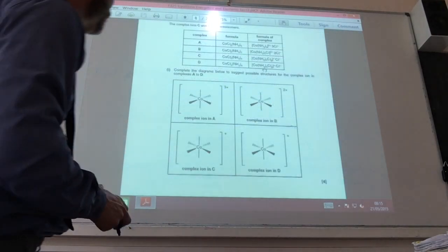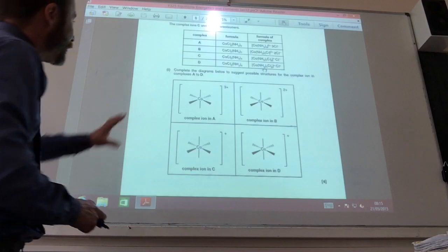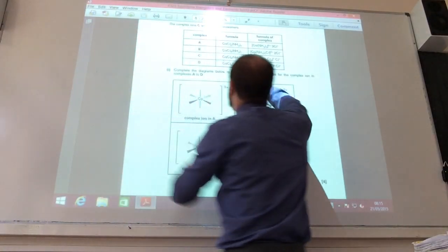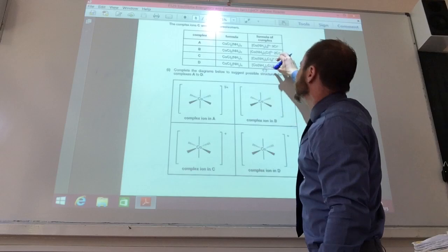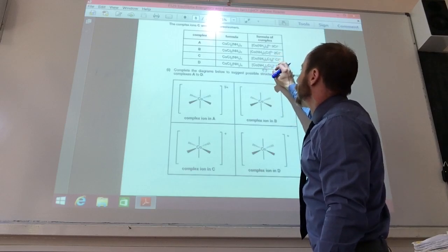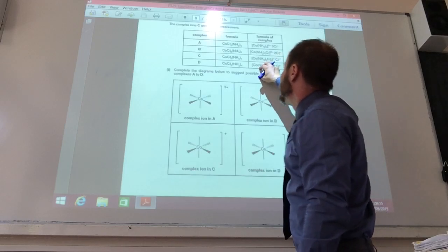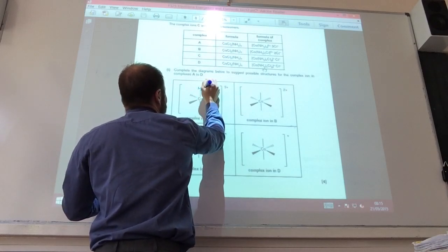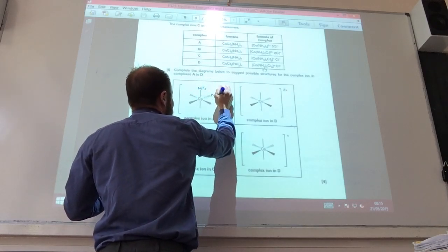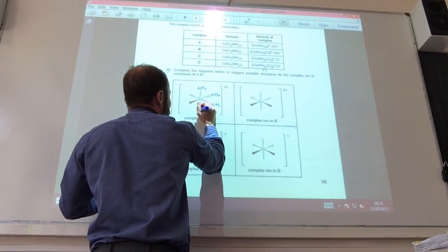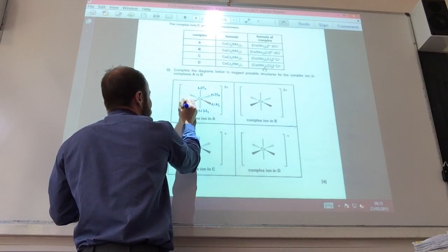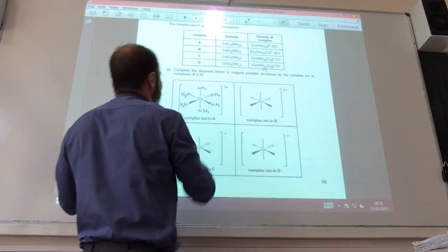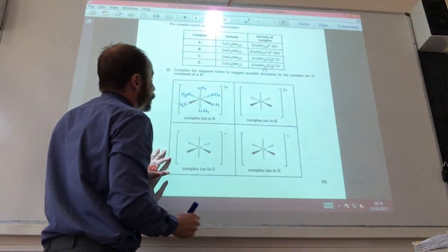This is an interesting one. They want me to draw these diagrams of a possible structure. The key thing to look at is this one, this is a form of the complex. Part A is going to be surrounded by 6 ammonia ligands. Always make sure that the atom that donates the electron pair is near the metal. In this case, it's nitrogen.